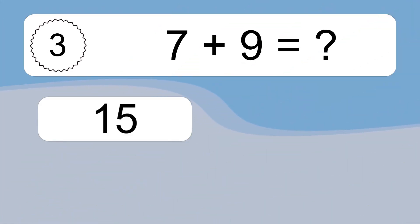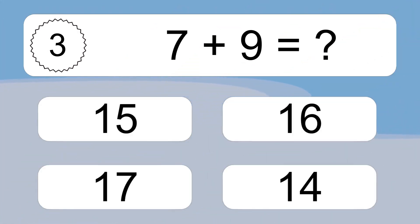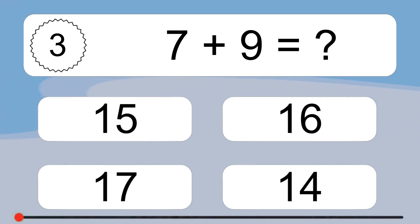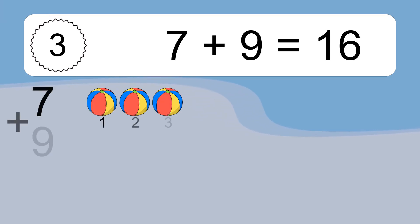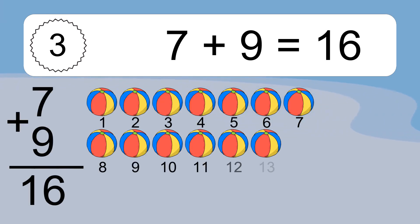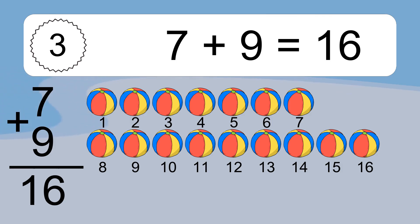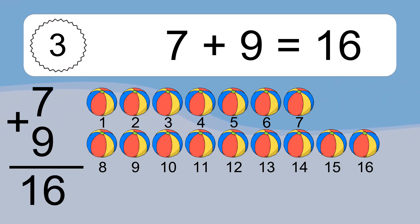7 plus 9 equals what? 7 plus 9 equals 16. Let's count it: 1, 2, 3, 4, 5, 6, 7, 8, 9, 10, 11, 12, 13, 14, 15, 16.